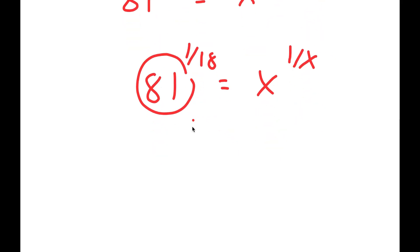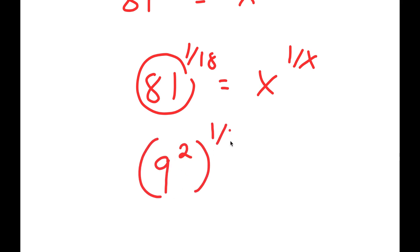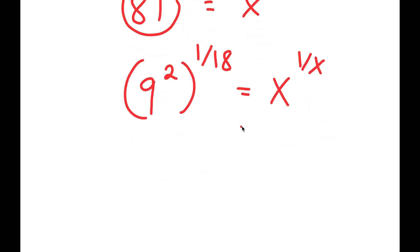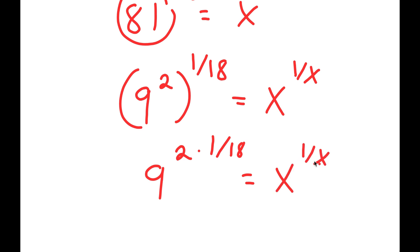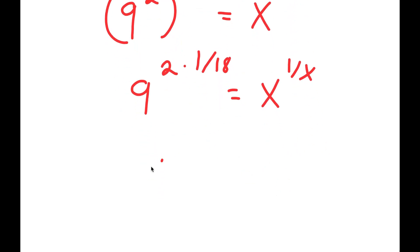Now 81 is the same thing as 9 squared. So I'm going to rewrite this as 9 squared to the power of 1 over 18 is equal to x to the power of 1 over x. This is the same thing as 9 to the power of 2 times 1 over 18 is equal to x to the power of 1 over x. And 2 times 1 over 18 is the same thing as 1 over 9. So I get 9 to the power of 1 over 9 is equal to x to the power of 1 over x.